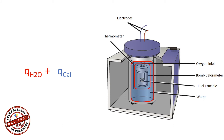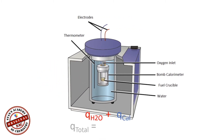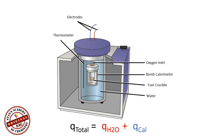To calculate the amount of heat energy released by the complete combustion of glucose inside the bomb calorimeter, we calculate the heat energy absorbed by water — Q_H2O — and the heat energy absorbed by the bomb calorimeter — Q_cal. Together, they give the total heat energy released: Q_total equals Q_H2O plus Q_cal.